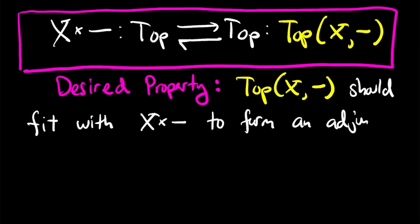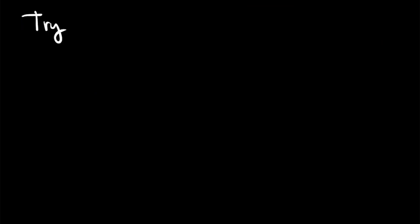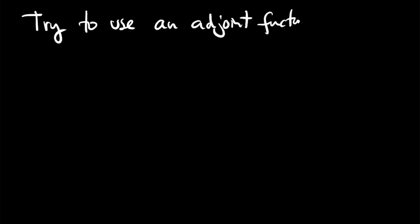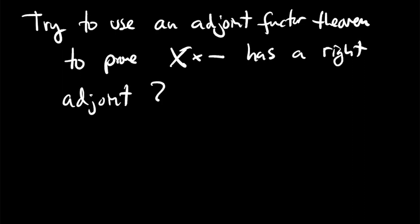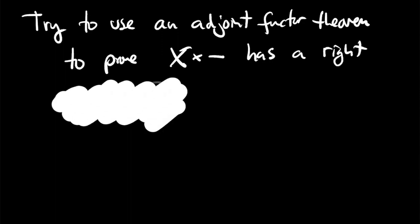One approach to solving this problem could be reduced to an adjoint functor theorem, and that's totally correct. That's the way certain really great topologists like Steenrod approach the problem. The difficulty is that you have to prove that crossing with x commutes with colimits, and generally that gets into some pretty hairy point-set topology issues. For example, the product of quotient maps isn't a quotient map in general.